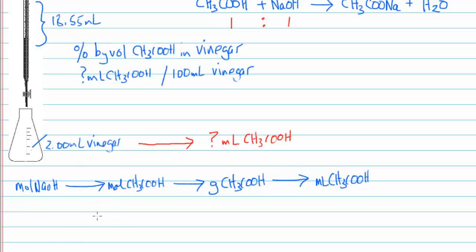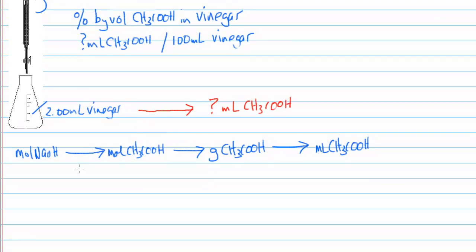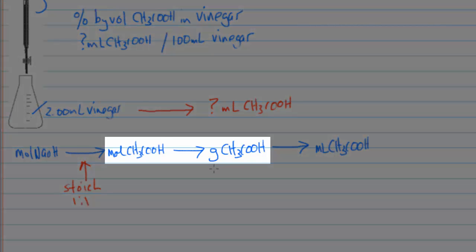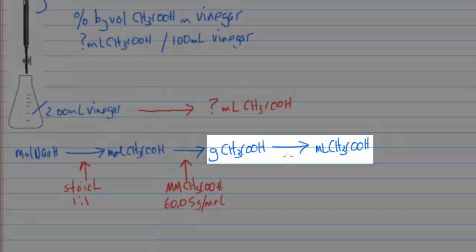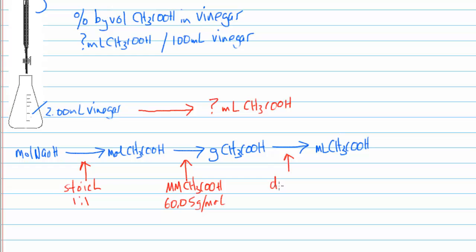How do we perform these conversions? The conversion from moles of sodium hydroxide to moles of acetic acid uses the stoichiometry of the reaction, which is one to one. The next conversion — moles of acetic acid to grams — uses the molar mass of acetic acid, which is 60.05 grams per mole. The final conversion from grams to millilitres uses the density of acetic acid, given as 1.049 grams per millilitre.